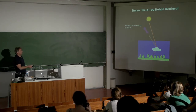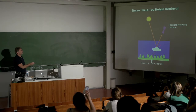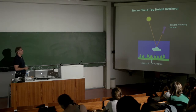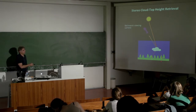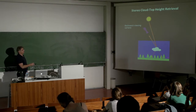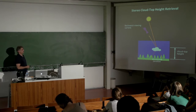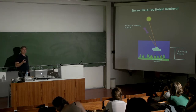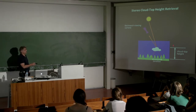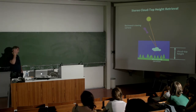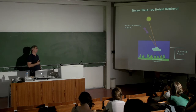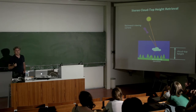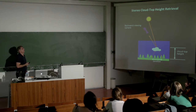If you have a cloud and look at it from one camera, its image will be projected at one location. If you look at it from a different angle, the position of the cloud within the image will shift. This distance is called the disparity or parallax. From this parallax, with a very simple geometry, if you know the angles, you can calculate the cloud top height.